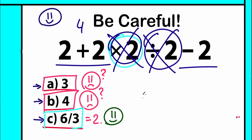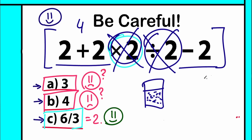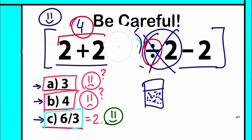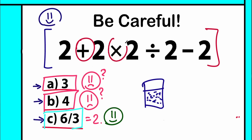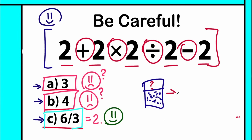Sometimes you plug this into a calculator and get a different answer. Make sure to plug in the whole entire problem from left to right. Your calculator is smart enough to know about order of operations — it will see addition, multiplication, division, subtraction, and solve it correctly, giving the answer 2.